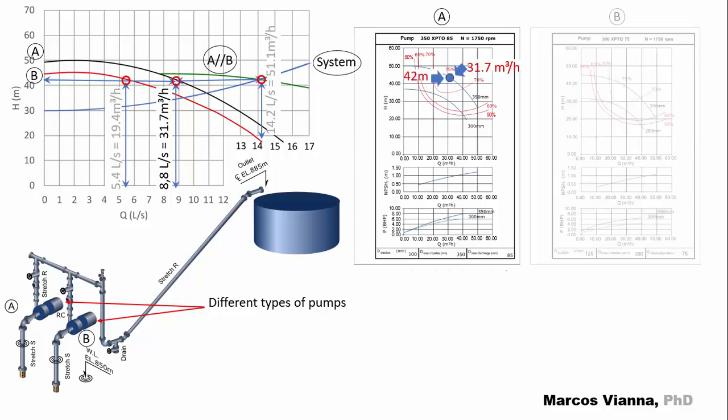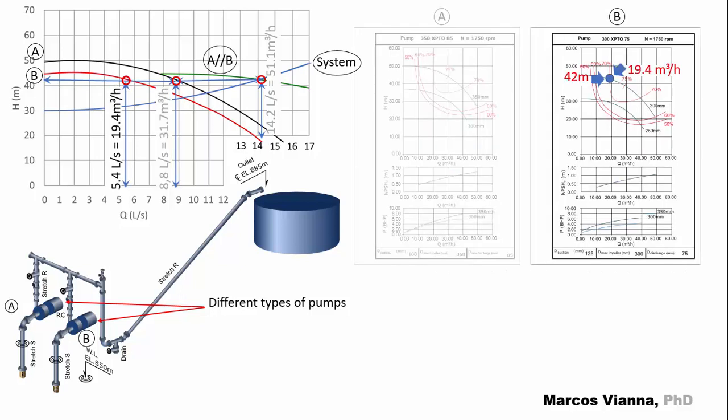Here is the operating point of A, from which we can find its power, its NPSHR, and its efficiency. And now, here is the operating point of B, and we do the same to find its power, its NPSHR, and its efficiency.